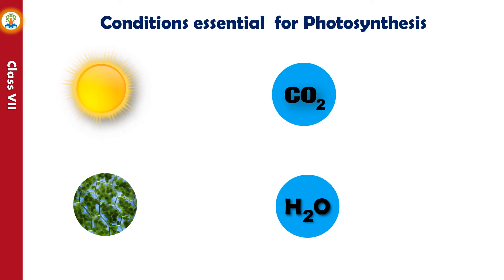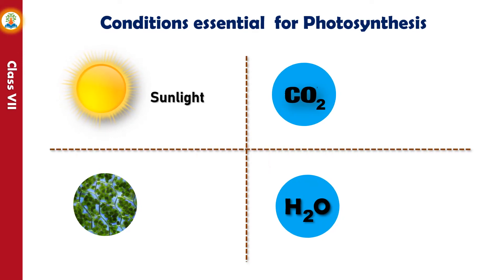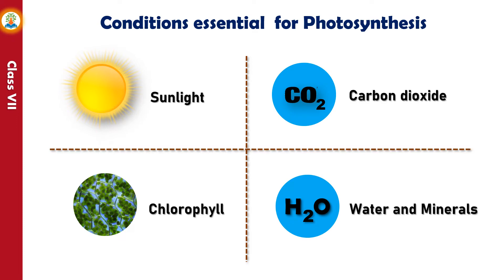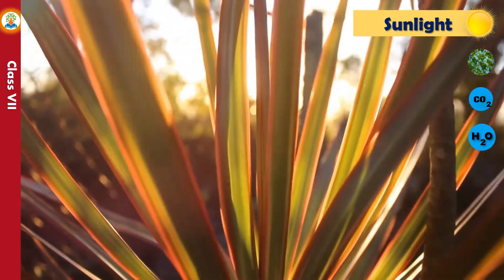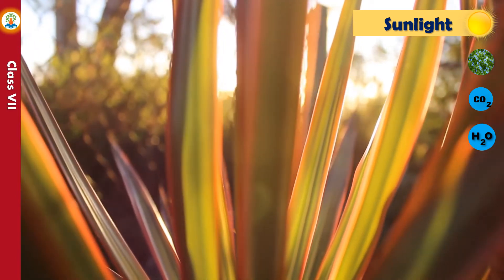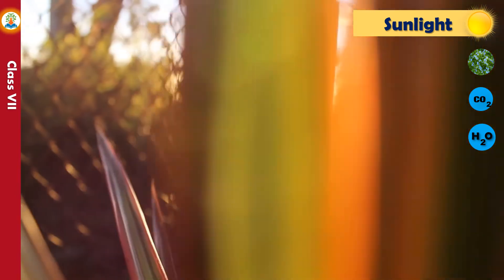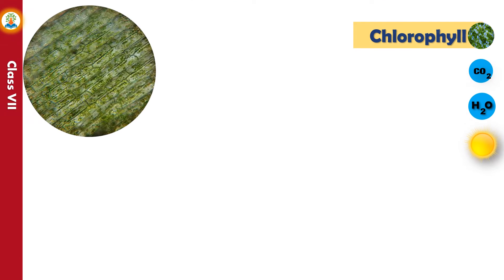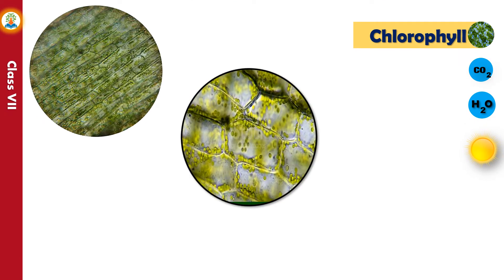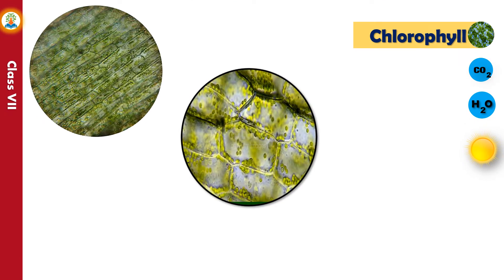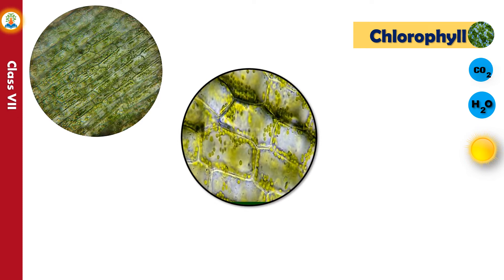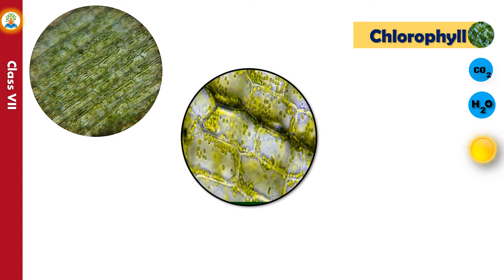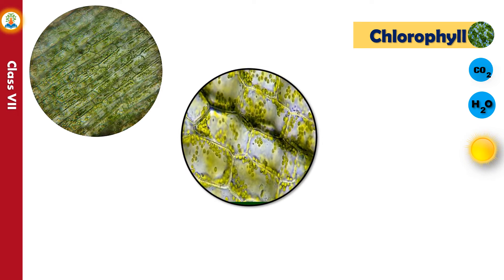The conditions essential for photosynthesis are: sunlight, chlorophyll, carbon dioxide, water and minerals. The sun is the ultimate source of energy for all organisms; photosynthesis cannot take place in the absence of sunlight. Chlorophyll is a pigment that can absorb light at different wavelengths, and is unique in its ability to enable plants to absorb the energy they need to build tissues.